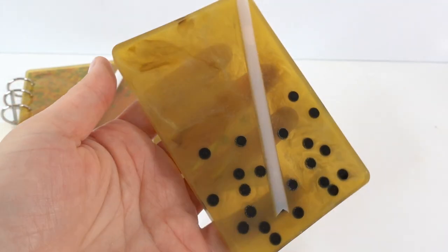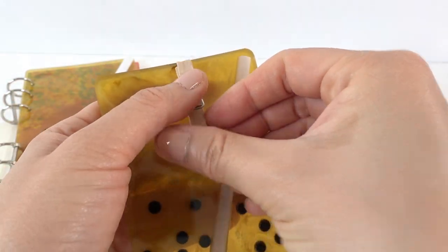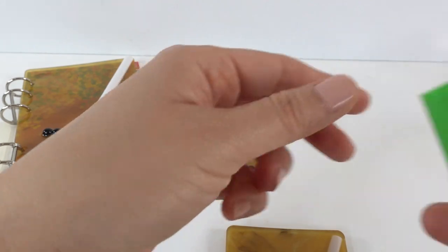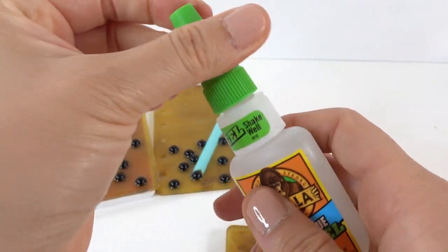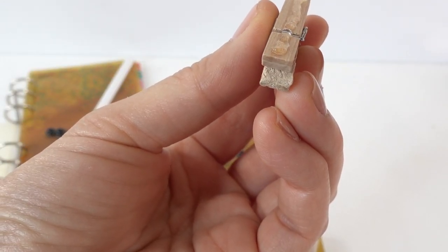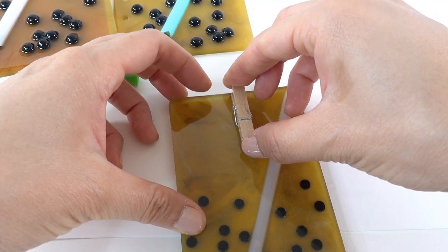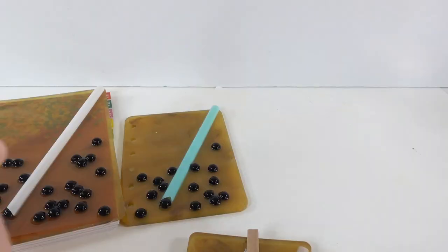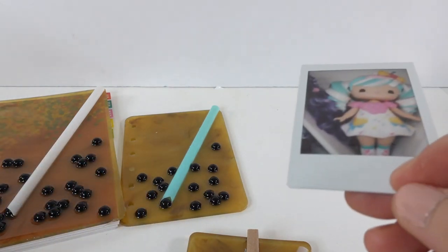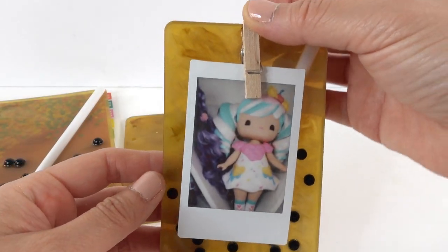So this one, what we're going to do is we are going to attach a little clip here with some super glue. Let's go ahead and check out our picture and clip it on.